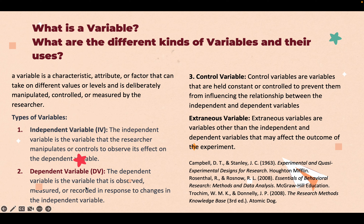The dependent variable is the variable that is observed, measured, or recorded in response to changes in the independent variable. For instance, if the independent variable is traditional versus computer-based instruction, the student's test score is the dependent variable — it is affected by the independent variable.